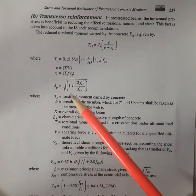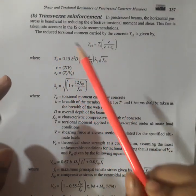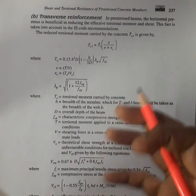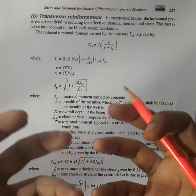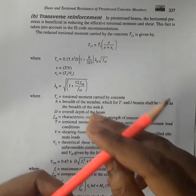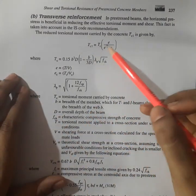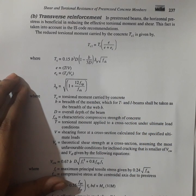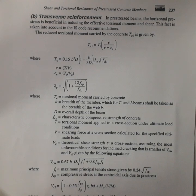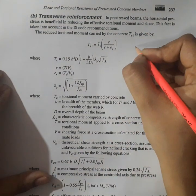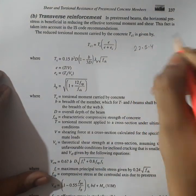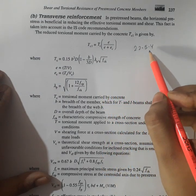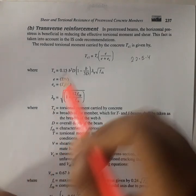Now, let us come to the transverse reinforcement in prestressed beam. Transverse reinforcement is very much efficient in order to resist the shear force in the beam. These are also mentioned in IS recommendations and the clause where this transverse reinforcement is provided is 22.5.4, IS 1343 1980.